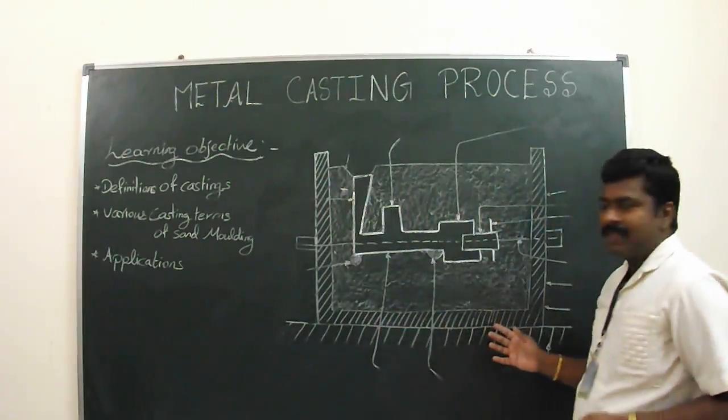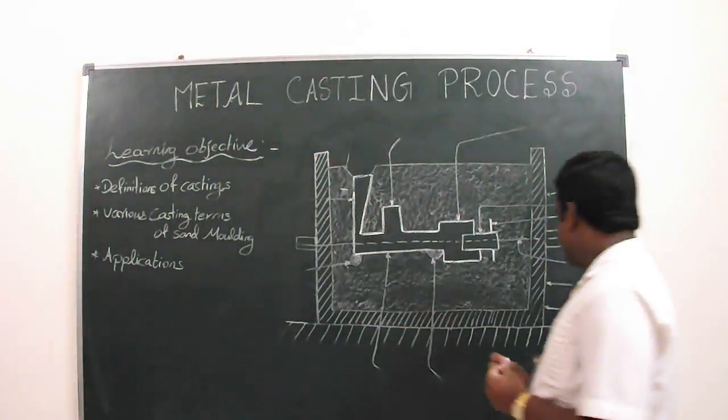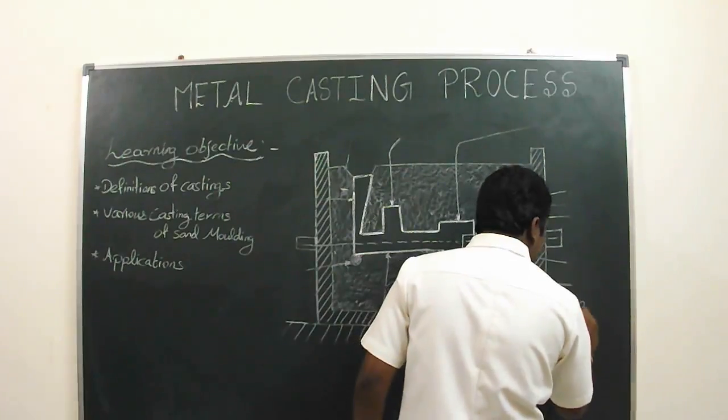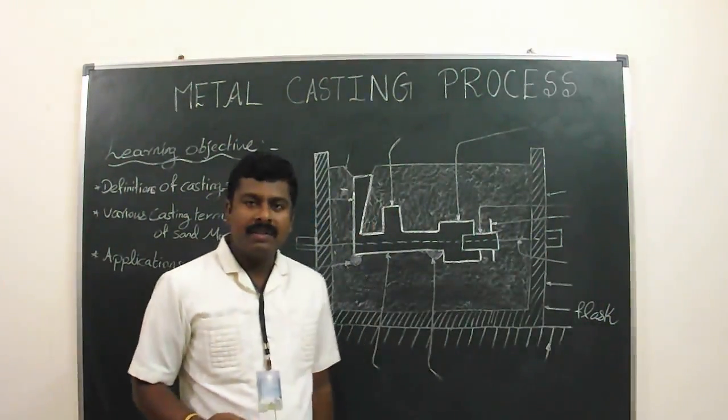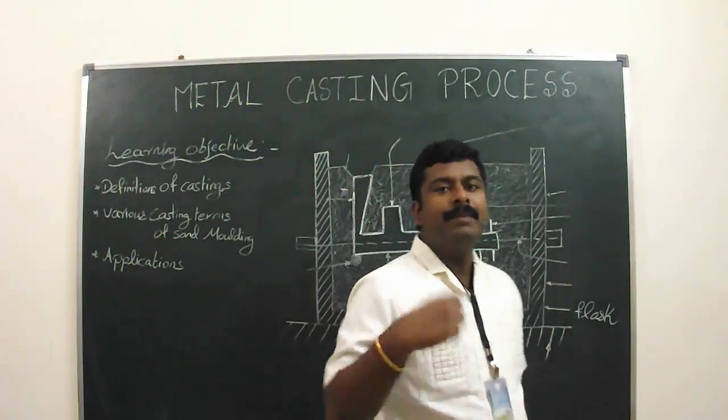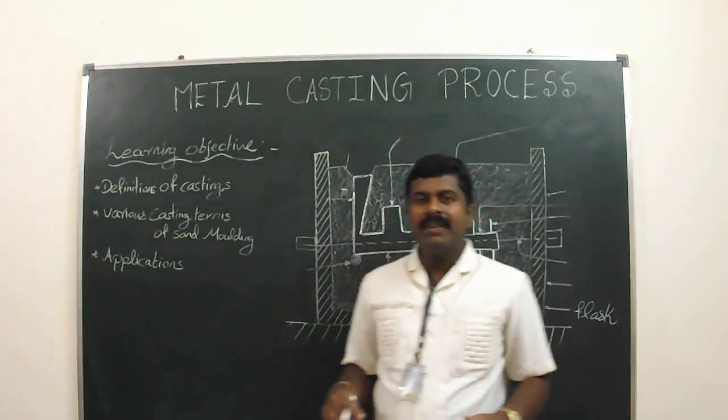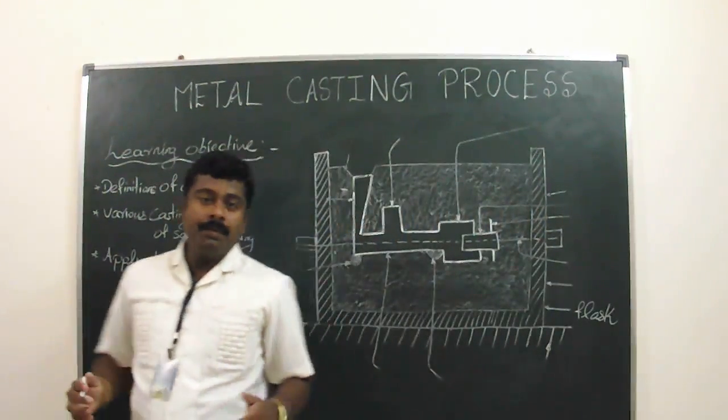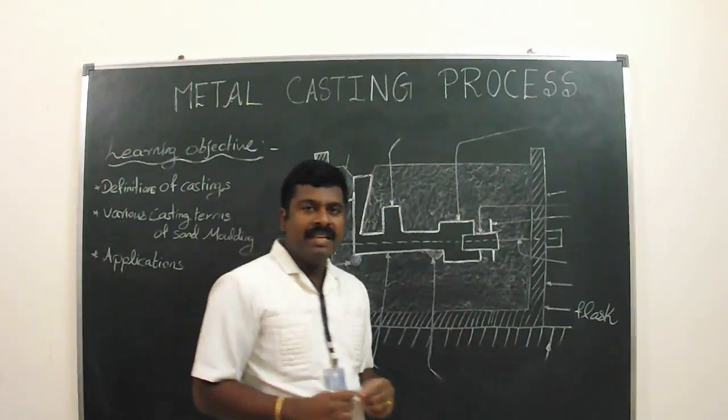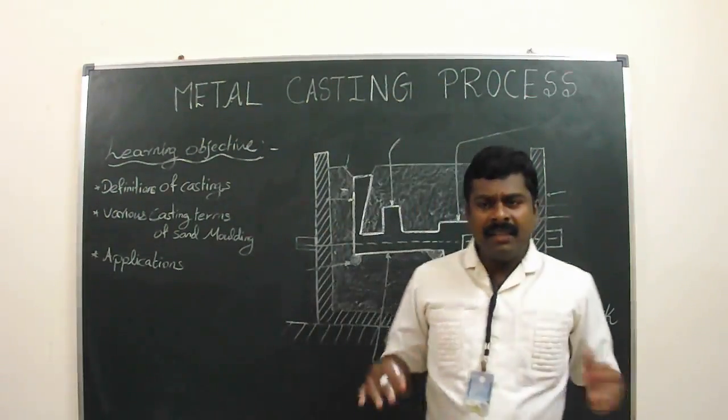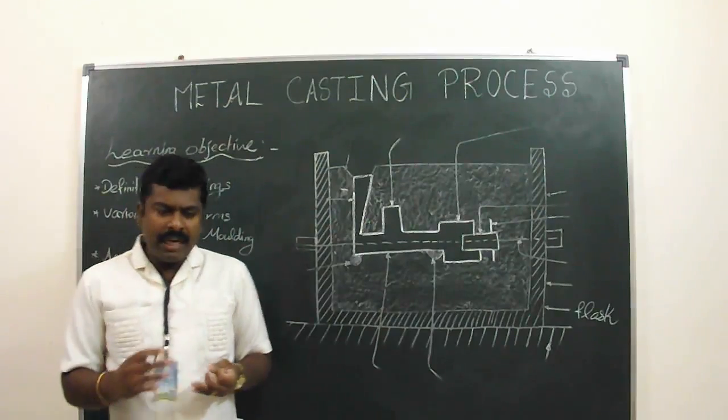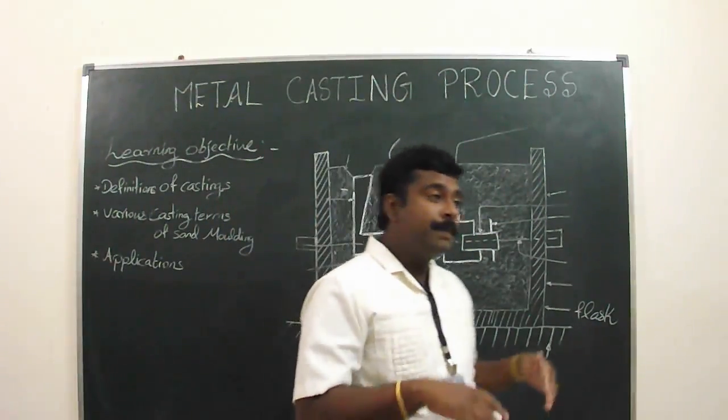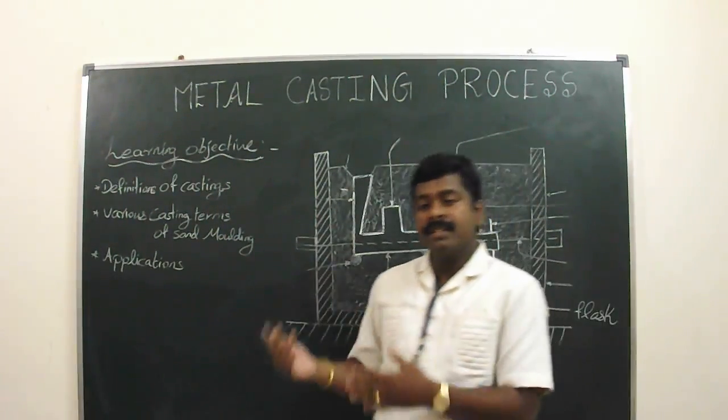The various casting terms of sand molding are: The first one is flask. Flask is a molding box. It is made of wood for temporary purpose and is broken when the hot molten metal is poured into the mold cavity. It is the cheapest one. Other metals like steel, cast iron, and aluminum are used for mass production, and it is an expensive one.